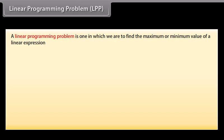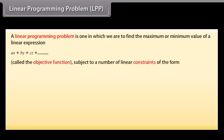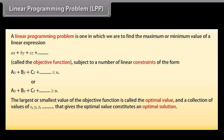Linear programming problem (LPP): a linear programming problem is one in which we are to find the maximum or minimum value of a linear expression AX + BY + CZ + ..., called the objective function, subject to a number of linear constraints of the form AX + BY + CZ + ... ≤ N. The largest or smallest value of the objective function is called the optimal value, and a collection of values of X, Y, Z, etc. that gives the optimal value constitutes an optimal solution. The variables X, Y, Z, etc. are called the decision variables.